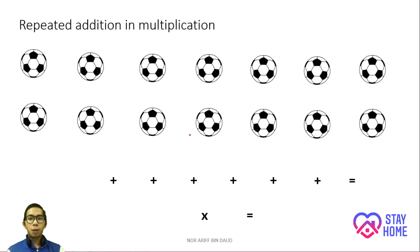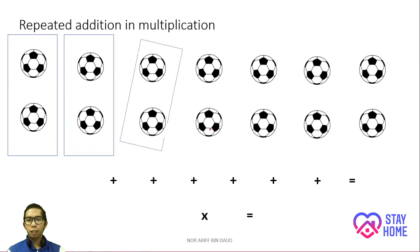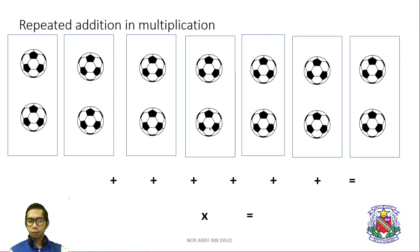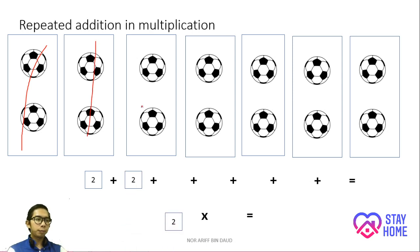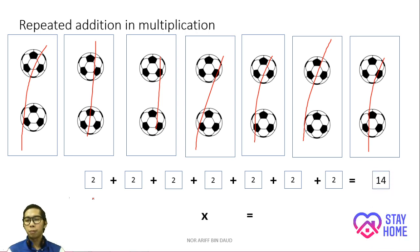Now we go to the balls. I have balls here — 1, 2, 3, 4, 5, 6, 7, 8, 9, 10, 11, 12, 13, 14 balls here. Let's put these balls in groups: 1 group, 2, 3, 4, 5, 6, and 7 groups of balls. The number I should put here is 2, because in each group we have 2 balls. So the total answer will be 14 — we have 14 balls here all together.